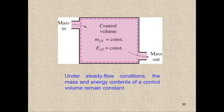Under steady flow conditions, the mass and energy contents of the control volume remain constant. Mass in equals mass out. So the energy and mass of the control volume will remain constant. We have steady flow, isothermal, isochoric, isobaric, and adiabatic processes. We will discuss other processes in chapter four.